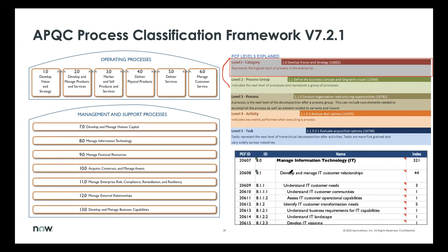To see what this looks like in the raw data, here's just a little excerpt. You can download the spreadsheets which have the ID — you can see the ID follows a structured numbering scheme. You've got the high-level IT, for example, which corresponds to number eight here, and then you have that breakdown to the lower levels — for instance, 'understand business requirements for IT capabilities.' This is where we need to understand what IT needs to do in order to support what the business is doing in the core operating processes.